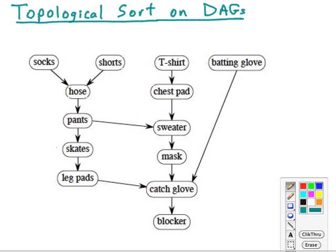Topological sorts are applied to directed acyclic graphs, or DAGs. As implied by the name, a directed acyclic graph is a graph that has no cycles. It's not necessarily a tree, but there are no cycles.